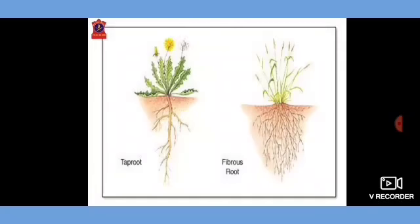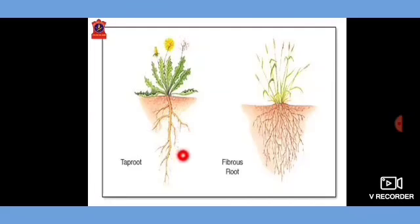You can see in the picture: this is a tap root. In a tap root, there is one very big root that goes down into the ground and many smaller roots come out of it. In fibrous root, there are many roots that go in all directions giving a bushy appearance.